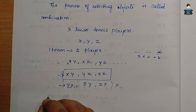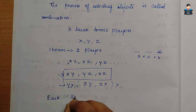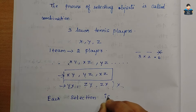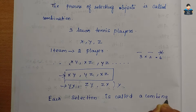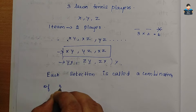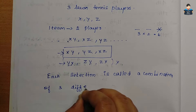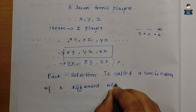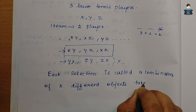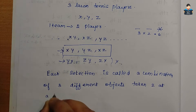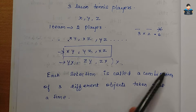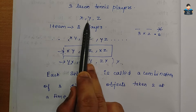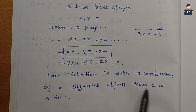Each selection is called a combination of three different objects taken two at a time. So XY is one combination, YZ is one combination, and XZ is one combination. Here, one-one selection is a combination of three different objects X, Y, Z — 3 players taken two at a time.